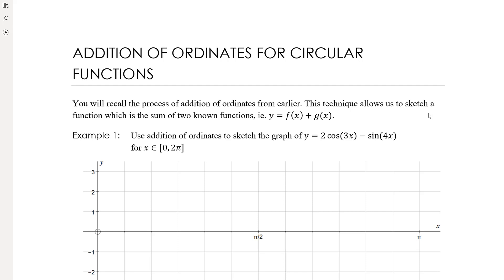In this video we're revisiting the idea of addition of ordinates as a technique for sketching the sum of two functions that we know separately from their two graphs, but don't necessarily know what the sum looks like. We looked at this back in chapter one with other graph types, and we're simply going to apply that technique when we've got circular functions or trig graphs. We'll look at two examples here.